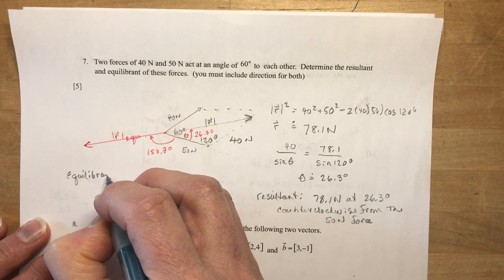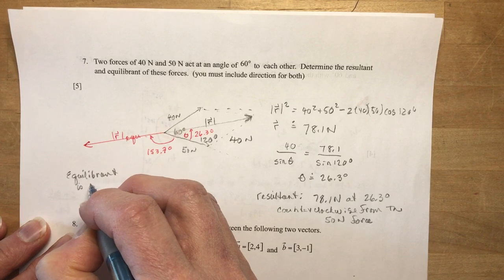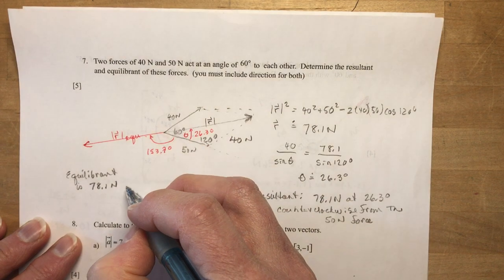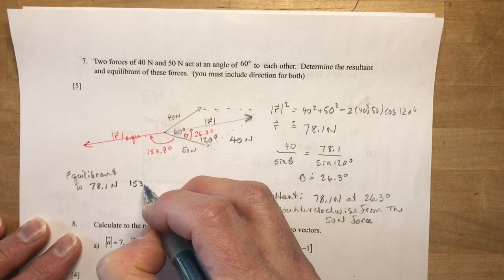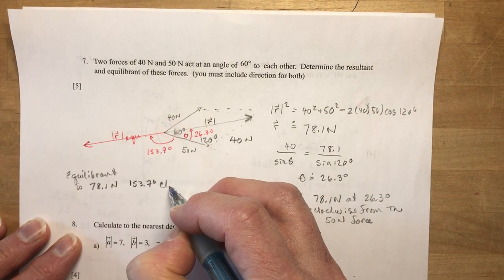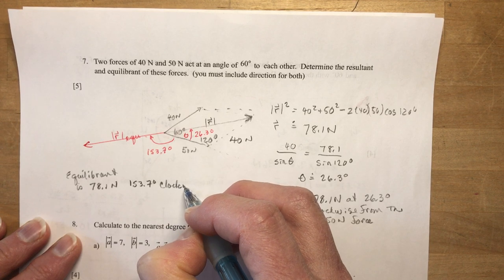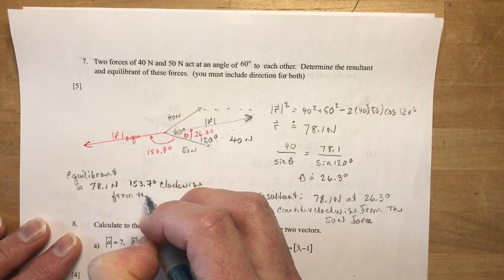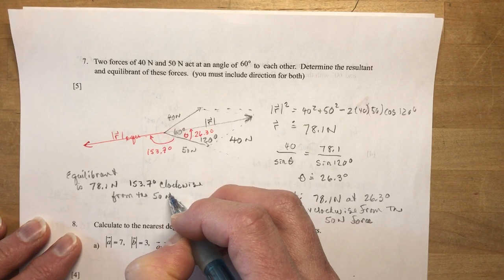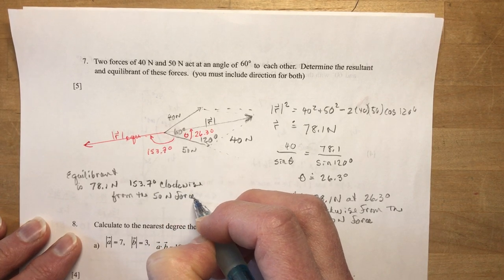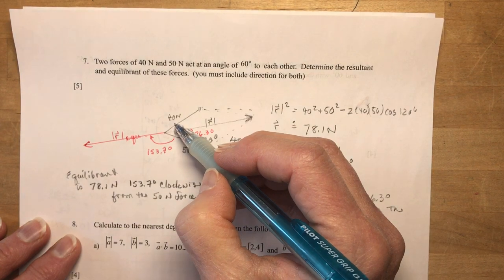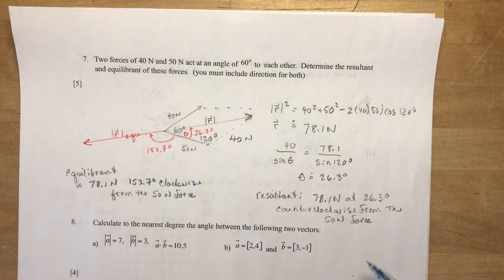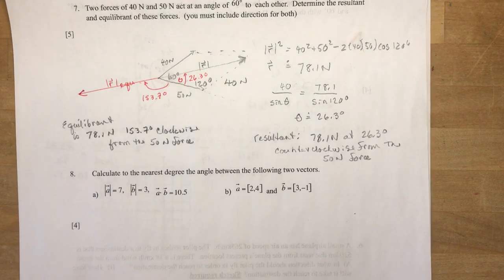Equilibrant is 78.1 newtons. And you're going to say 153.7 degrees clockwise from the 50 newton force. Now you could use the other force. You could find the other angle from here around to here. That's up to you. But that's why I did this one.